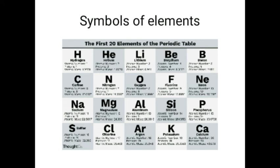We learn hydrogen, helium, and the elements in the periodic table — about 20 elements. You should know the name of all these elements and their symbols. The periodic table includes the name of all elements, their symbols, atomic numbers, and mass numbers.